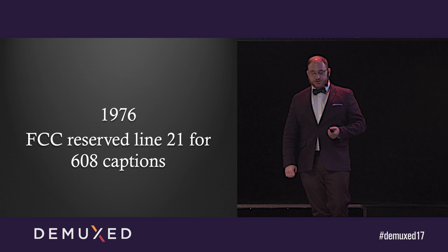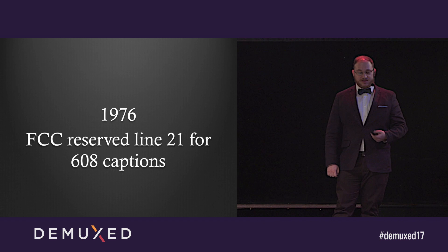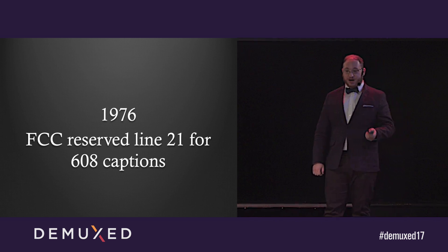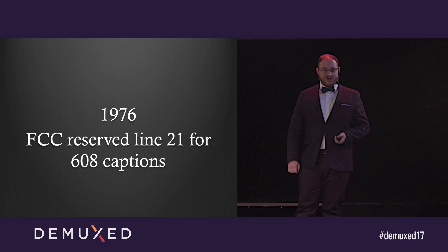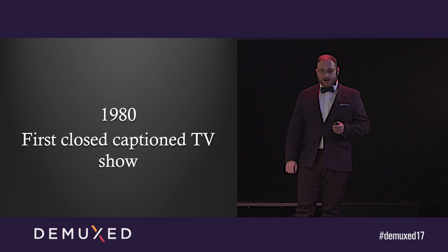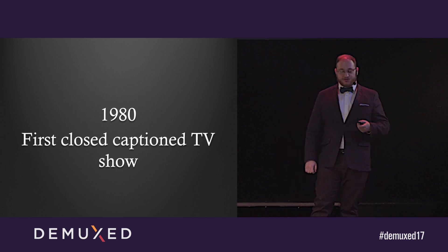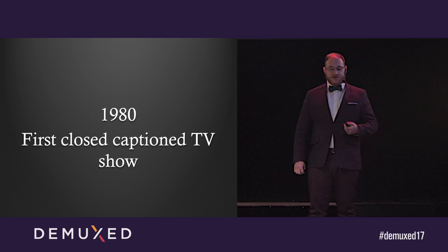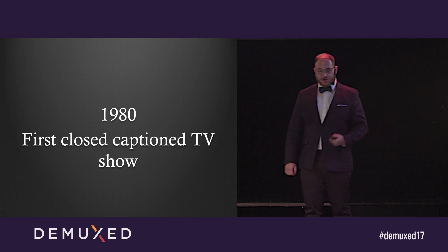Since closed captions were introduced, there's been a lot of work, especially since the first caption. In 1976, the FCC reserved Line 21 of the North American Broadcast Signal for the 608 caption standard. And throughout the entire time, lots more work was happening in closed captions. In 1980, the very first closed caption TV shows were broadcast across the US.